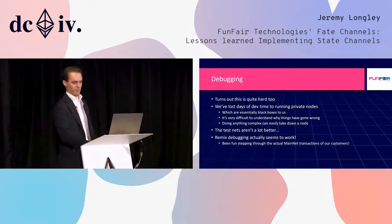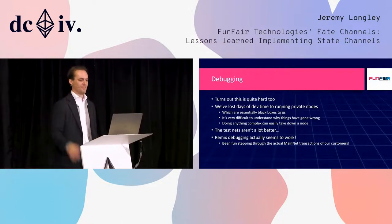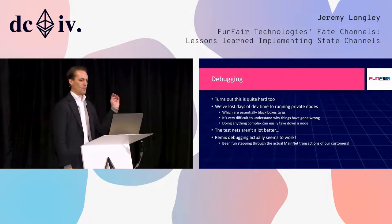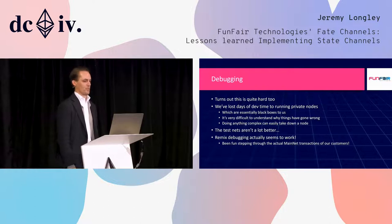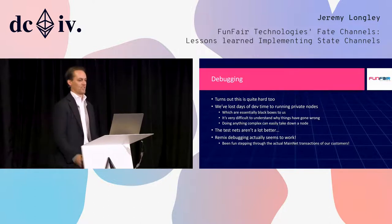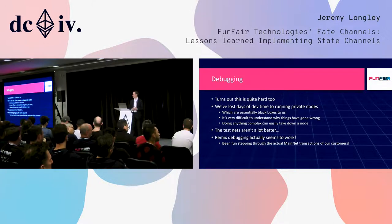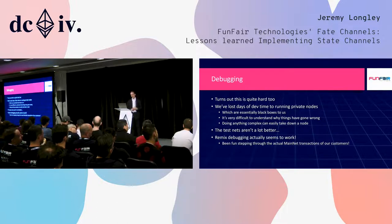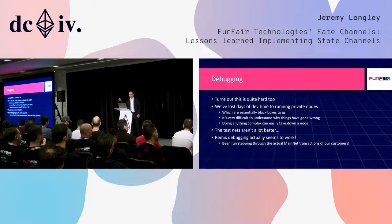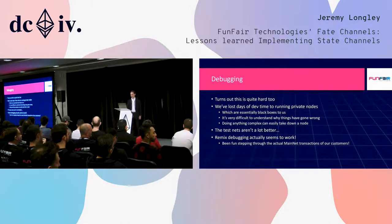Debugging is hard on the blockchain — that's just simple. When you're running private nodes, they're black boxes, they crash and go down, and it takes ages to restart. The testnets, depending on the week, sometimes work but aren't particularly representative of mainnet. Remix debugging, when it works, is actually quite fun — I've loved stepping through individual transactions on mainnet to see what our customers have done. But it's all pretty hard.